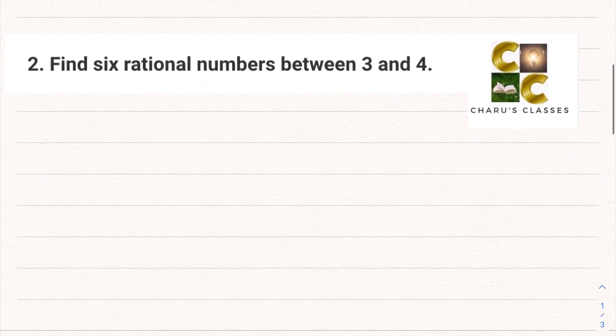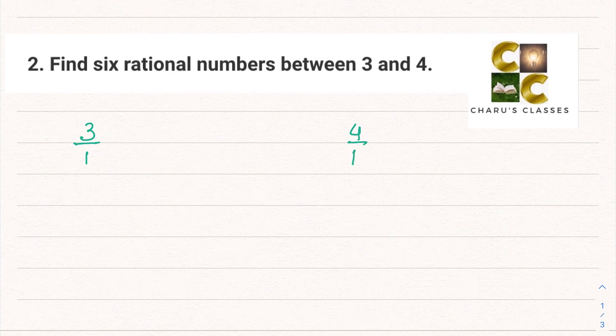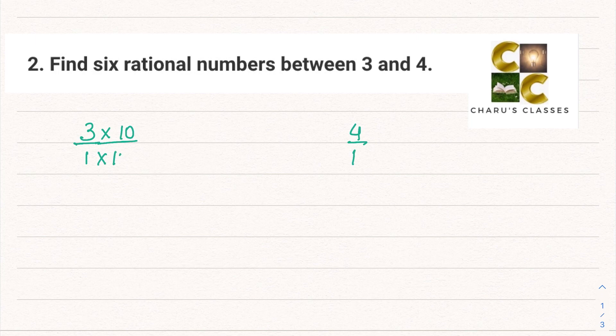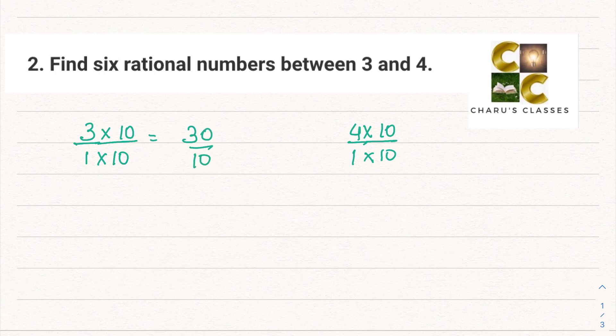Question number 2: Find six rational numbers between 3 and 4. I can write 3 as 3 by 1 and 4 as 4 by 1. Now I need to find six rational numbers between them. I can multiply the numerator and denominator by 10.